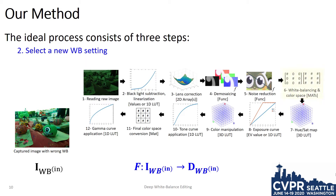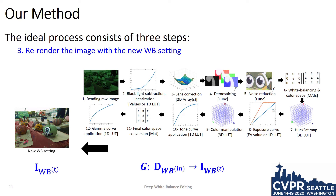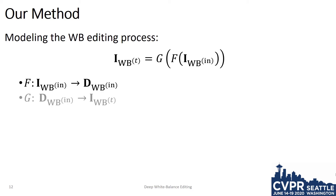Next, after we have de-rendered the image, we can select a new white balance setting. Finally, we re-render the image with the new white balance setting. We refer to this re-rendering with the function G. We write this entire process as follows, where the function F serves to un-process or de-render the image, and the function G reprocesses the image with the new white balance setting.